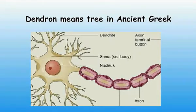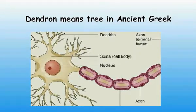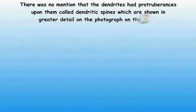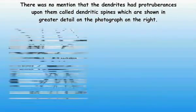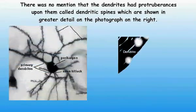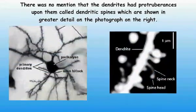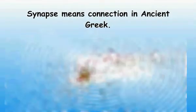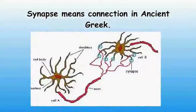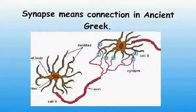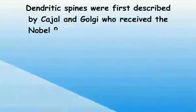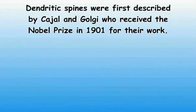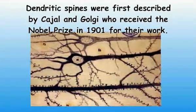The dendrites were usually drawn as smooth-edged diagrams. There was no mention that the dendrites had protuberances upon them called dendritic spines, which are shown in greater detail on a photograph on the right. The dendritic spines have synapses or connections with other neurons on their surface. Synapse means connection in ancient Greek.